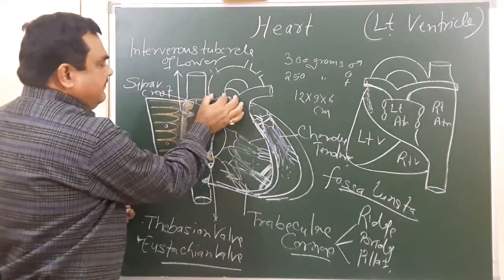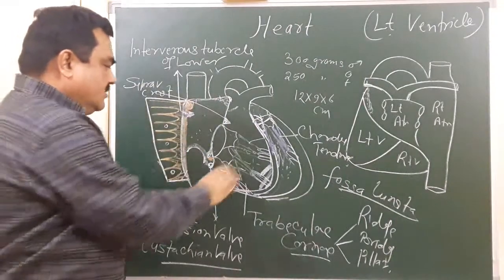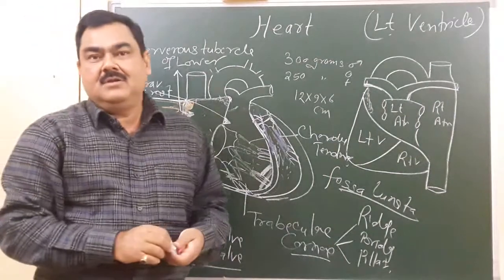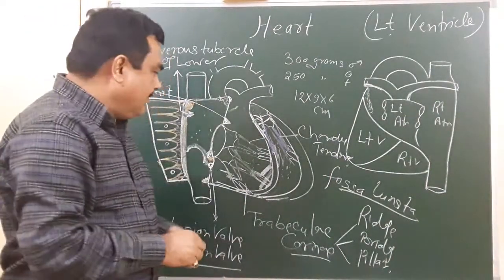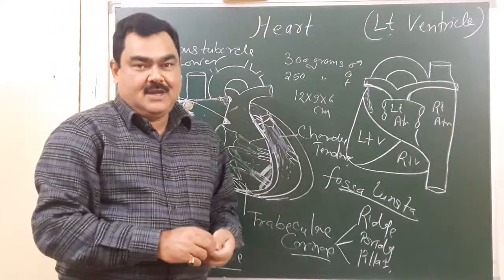it communicates with the ascending aorta. From here to here, the rest of the part is smooth and develops from the bulbus cordis. This is all about the left ventricle. Thank you.